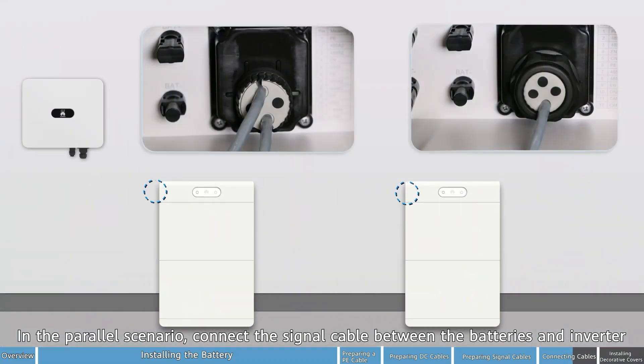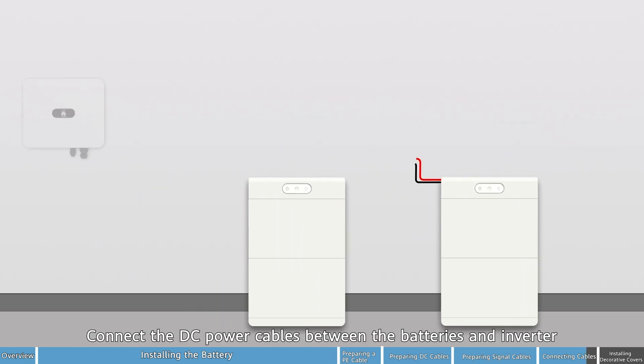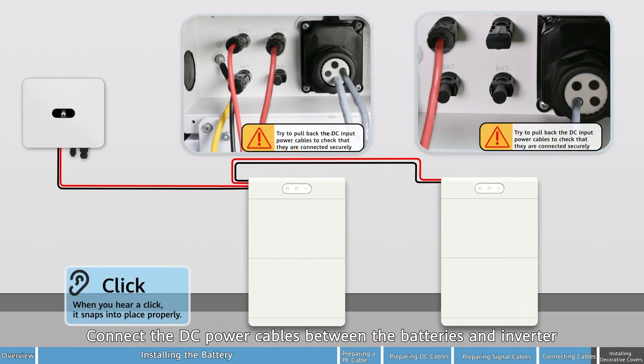In the parallel scenario, connect the signal cable between the batteries and inverter. Connect the DC power cables between the batteries and inverter.